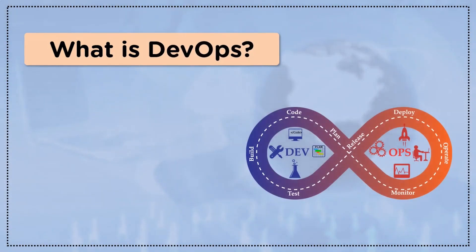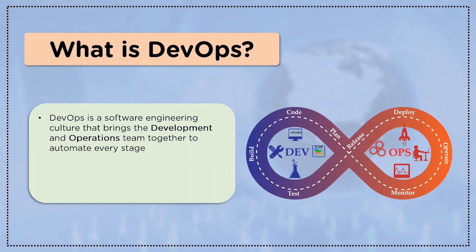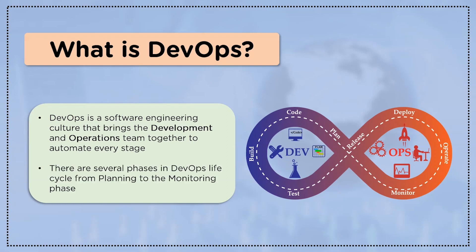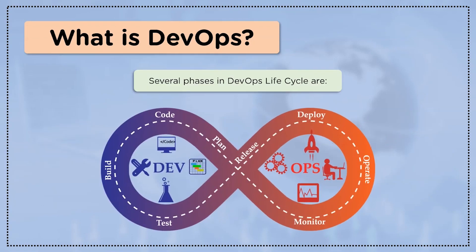DevOps is a software engineering culture that unifies the development and operations team under an umbrella of tools to automate every stage. There are several phases in the DevOps lifecycle beginning from the planning phase and going up to the monitoring phase. The stages begin with planning and coding, where tools like Git and Jira are used to provide the repository for managing and storing various code versions.